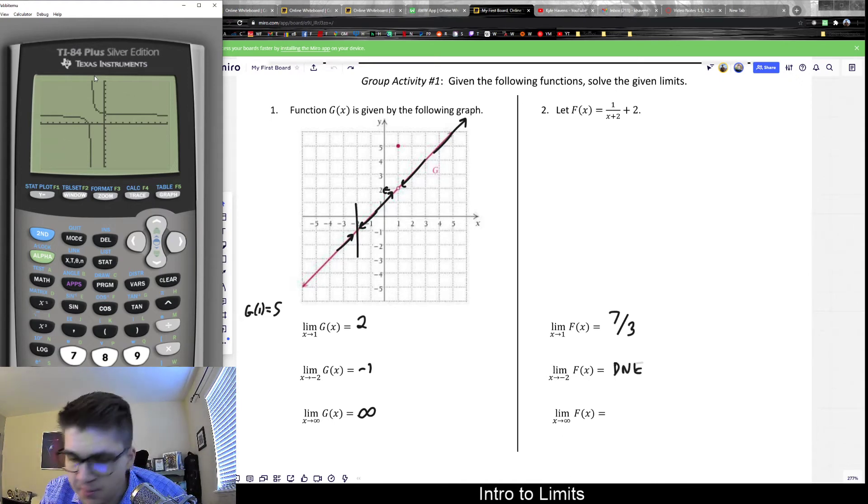So sometimes undefined values mean the limit doesn't exist. Sometimes they might. It just depends. And that's why you really got to look at the graph, check the numbers to see. And the limit towards infinity here, it's kind of hard to tell. Now, I haven't done any examples of how would you do it numerically towards infinity.